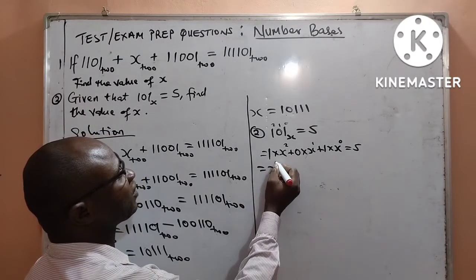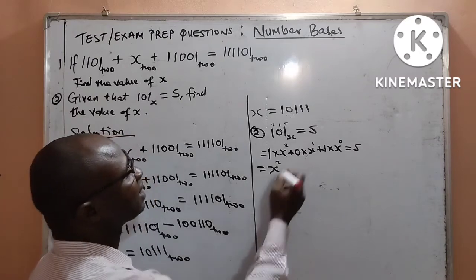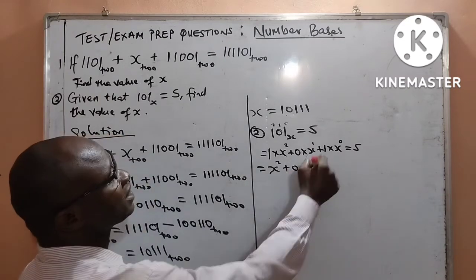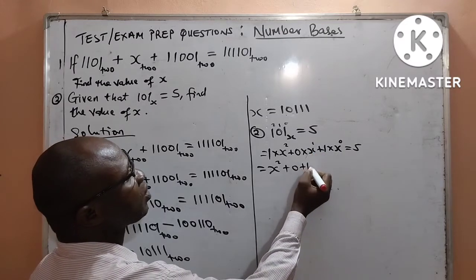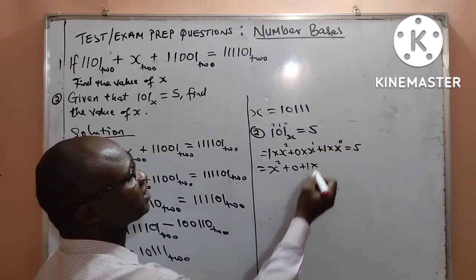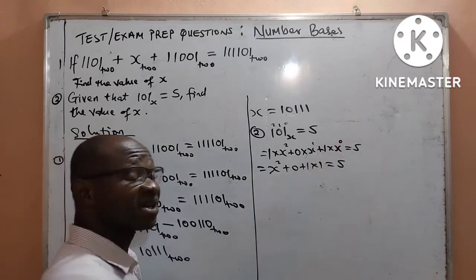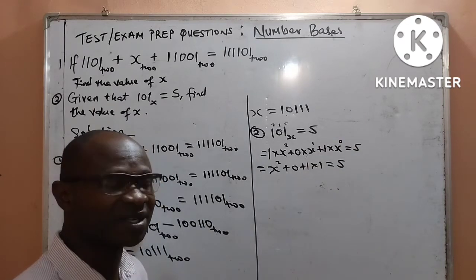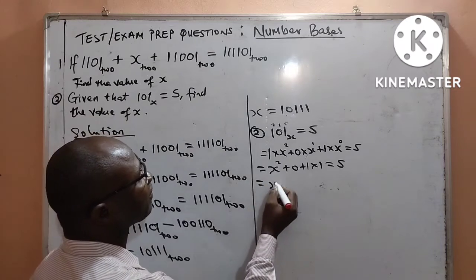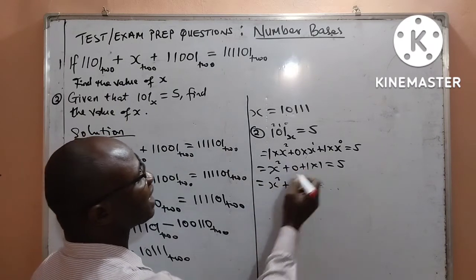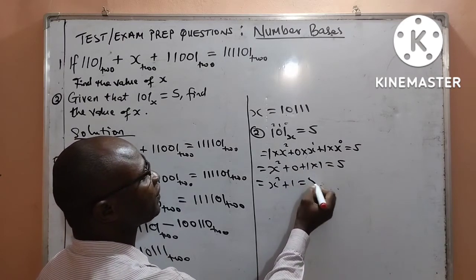Therefore, I have 1 times x raised to power 2 to give me x raised to power 2. Then 0 times x raised to power 1 will give me 0. Then, here we know that x raised to power 0 is actually equal to 1. Any number or letter raised to power 0 is 1. This will now give us x raised to power 2 plus 0, then 1 times 1 is 1, equal to 5.